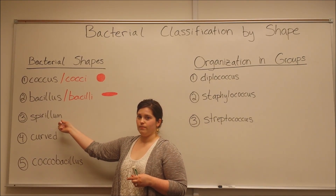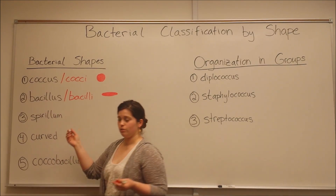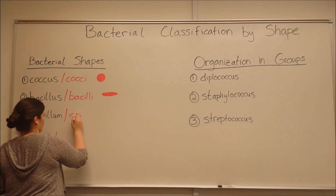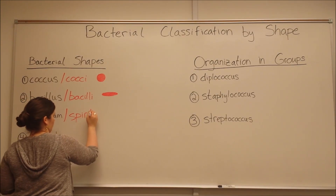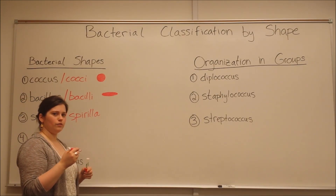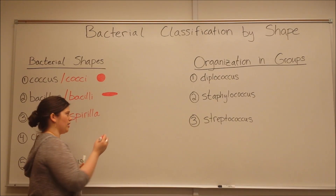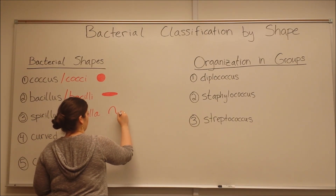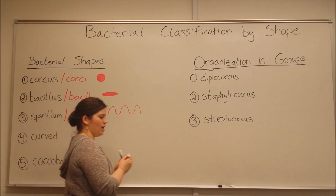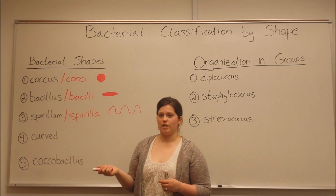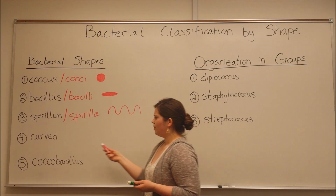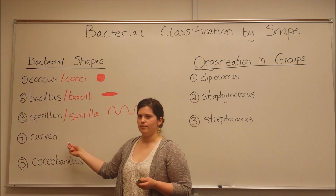Next, there are spirillum shaped bacteria, or spirilla. These are sort of spiral shaped. An example of a spirilla bacteria is Treponema pallidum, which causes syphilis.